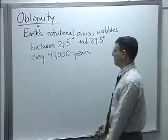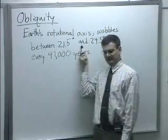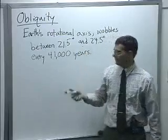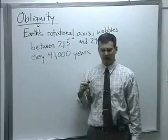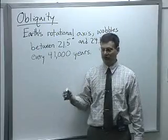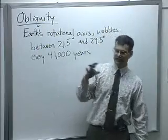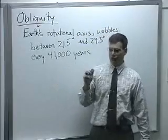In the current geological epoch, we happen to be right in the middle of this thing. What would you expect if we actually were at the extreme, at 21.5 degrees? Well, seasonal variations would be a little more mild. You wouldn't get quite the swing that you currently get.